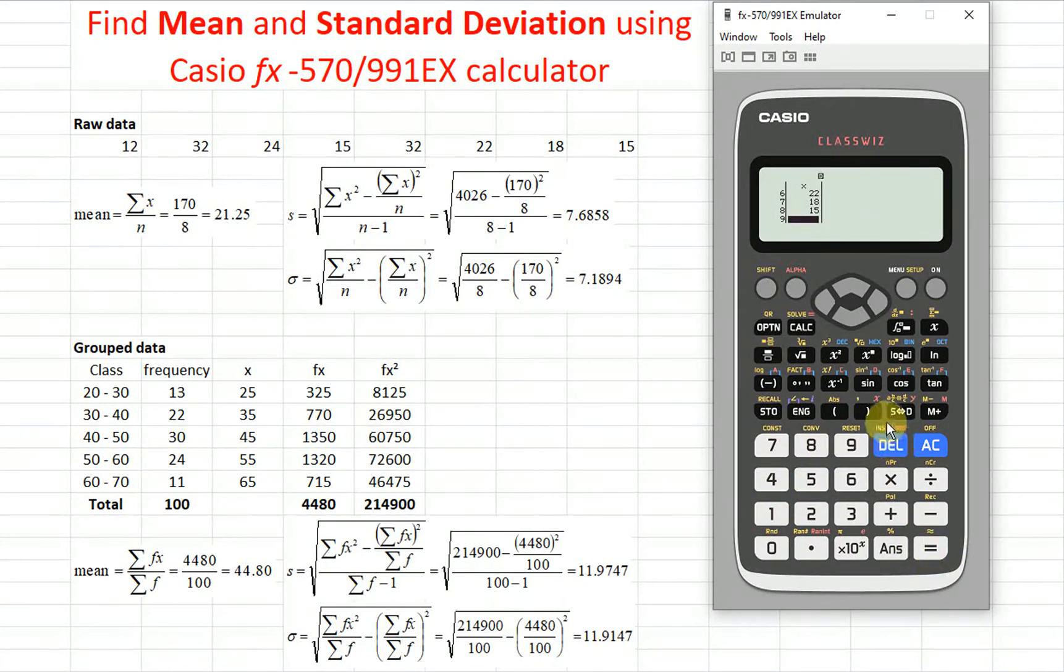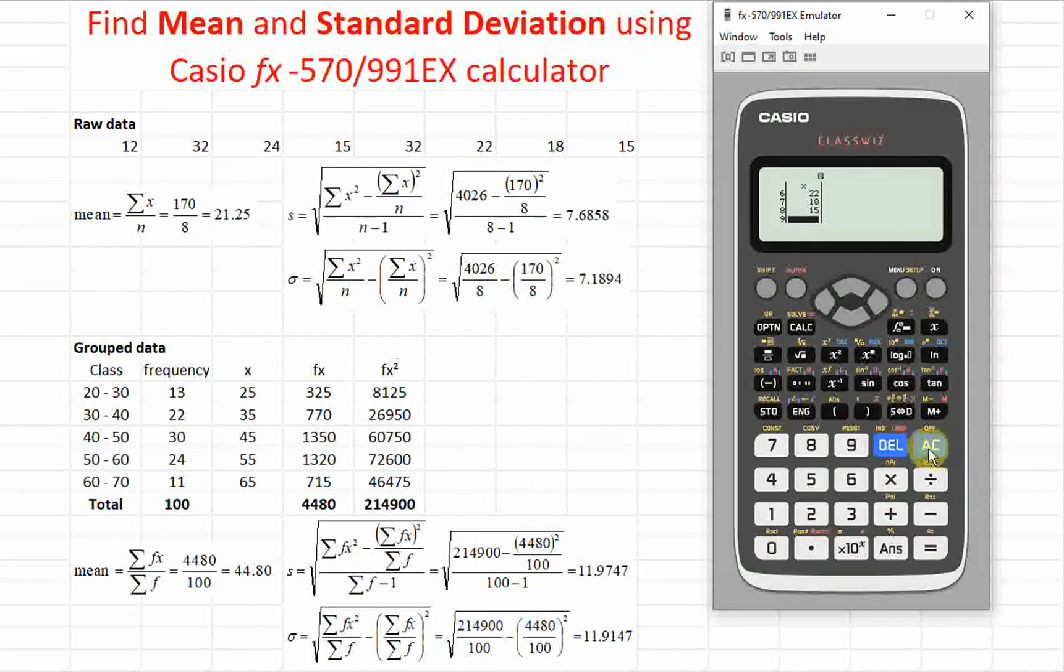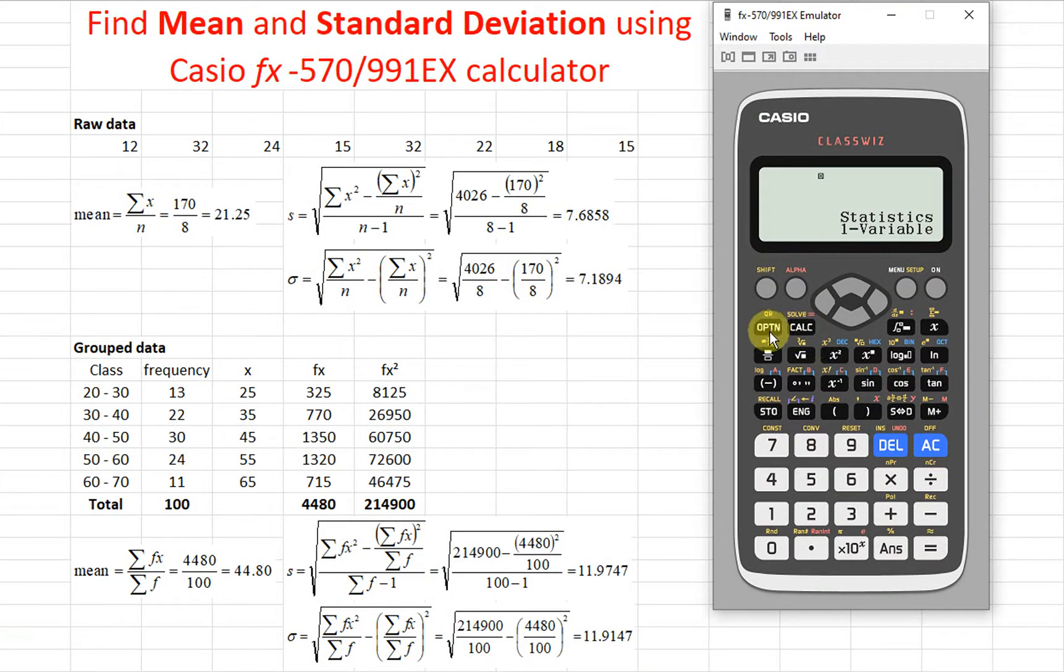Done. So we press AC to escape. So next we press on option button. So we look for one variable calculation, 2. So here are all the statistics that we want.